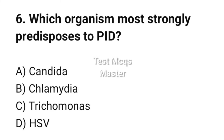Question number 6. Which organism most strongly predisposes to PID? The correct option is B: Chlamydia.